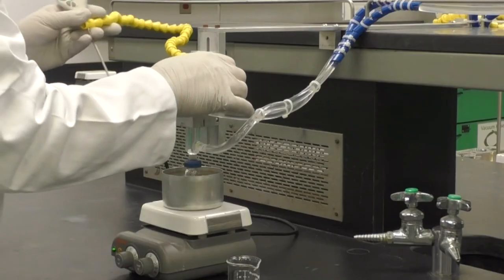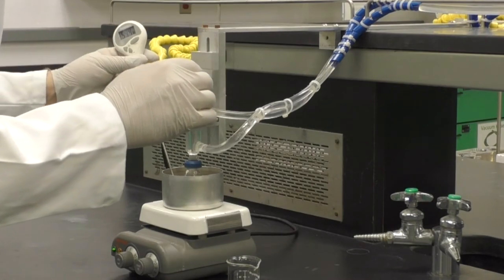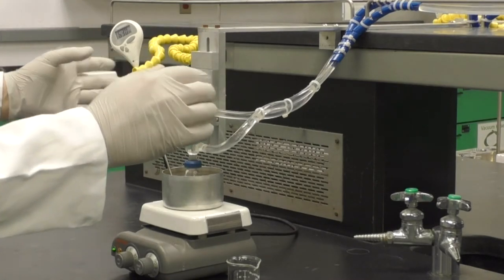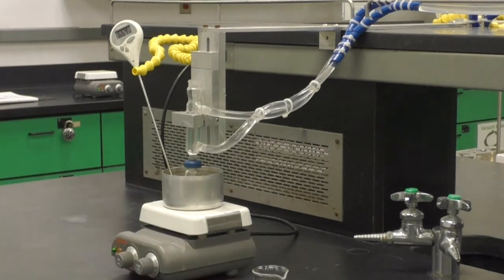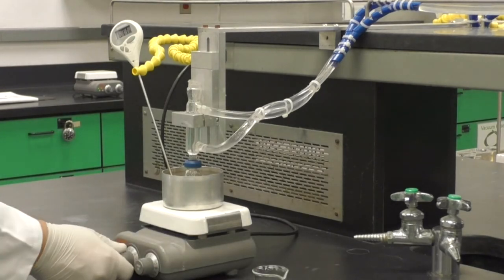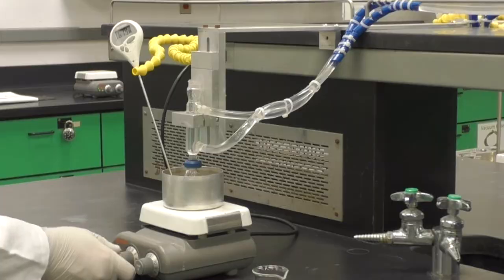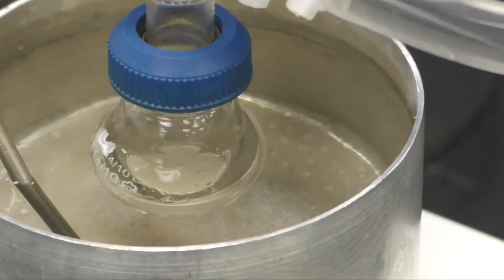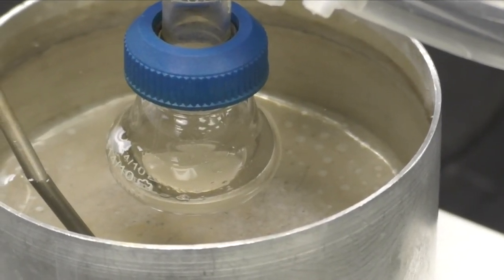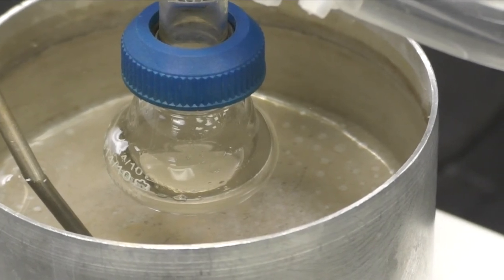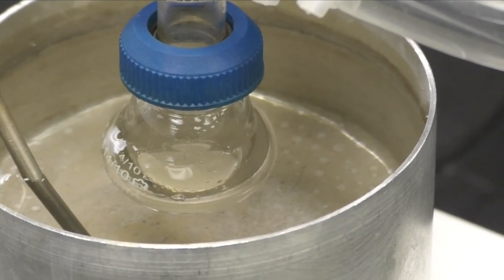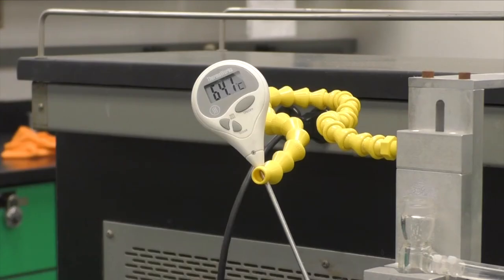Lower the thermometer into the water bath. Make sure the tip of the thermometer is suspended in the water and that the probe does not touch the metal of the water bath. Turn on the heat and set it to about 3. Then set the stirring so an obvious vortex is formed to allow good mixing of the organic and aqueous layers. As the temperature reaches 65 degrees centigrade, adjust the heat to keep it right around that temperature and begin timing for 15 minutes.